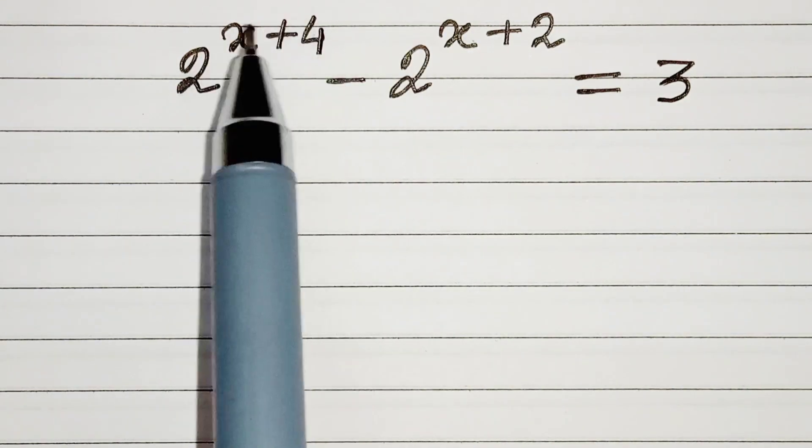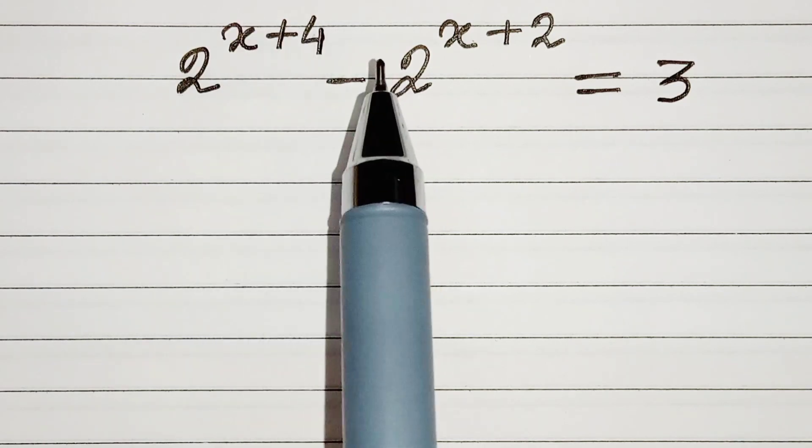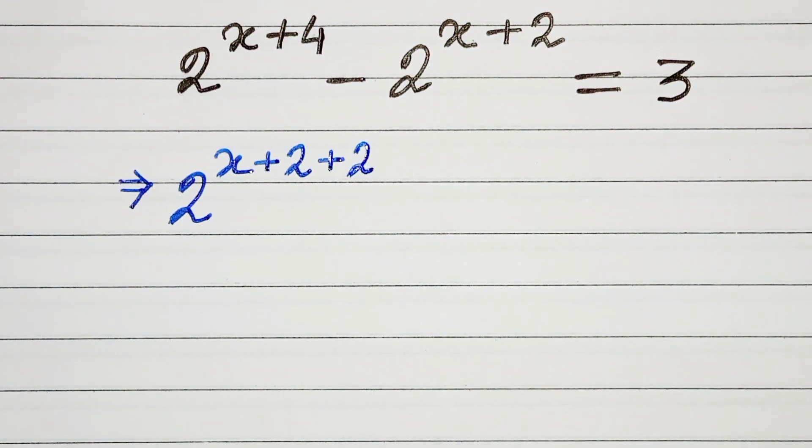We can write x plus 4 as x plus 2 plus 2. So let's start. 2 raised to the power x plus 2 plus 2 minus 2 raised to the power x plus 2 equals to 3.